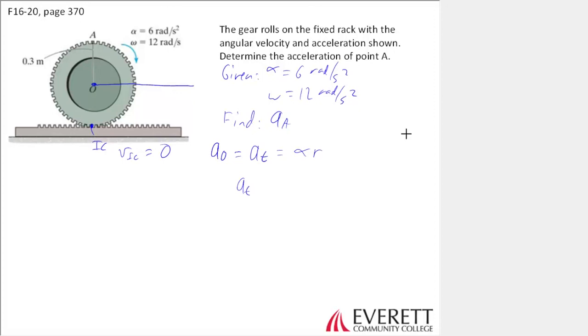Or in the vector form, a_T is equal to alpha crossed with R. And what is that R? It would be the position of O with respect to the IC. That is fairly easy to calculate, right?